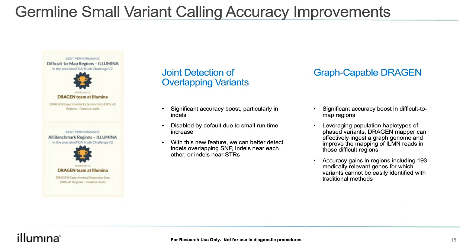The first is what we call joint detection of overlapping variants, on a single-sample basis — not to be confused with joint genotyping. This is an accuracy boost that improves our indel calling. With this new feature, we can detect indels in overlapping SNPs, indels near each other, or indels near STRs much better than before. In this release, we observed a small runtime increase when enabling it, so we have disabled it by default. But if you can accept that small runtime hit, you can turn this on at the command line.